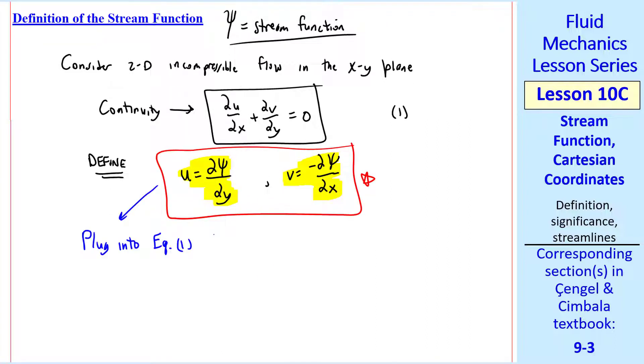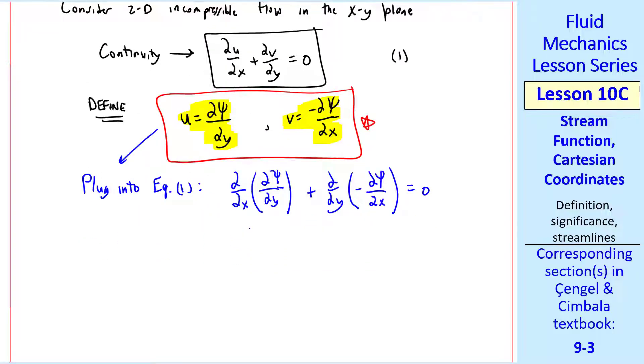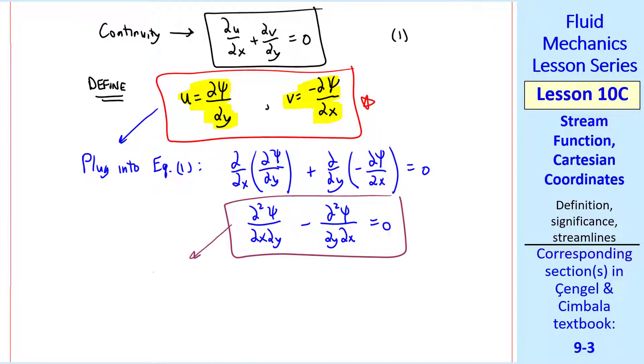Well, if you plug these into equation 1, we have del del x of del psi del y plus del del y of negative del psi del x equals 0, which we can rewrite as del squared psi del x del y minus del squared psi del y del x equals 0.